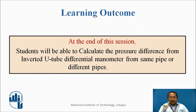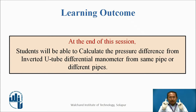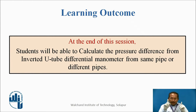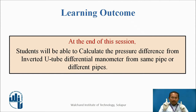The inverted U-tube differential manometer can be joined to one pipe or two different pipes. Previously, we have seen that the U-tube differential manometer was joined to a single pipe to calculate the pressure difference, and similarly it can be joined to two different pipes.